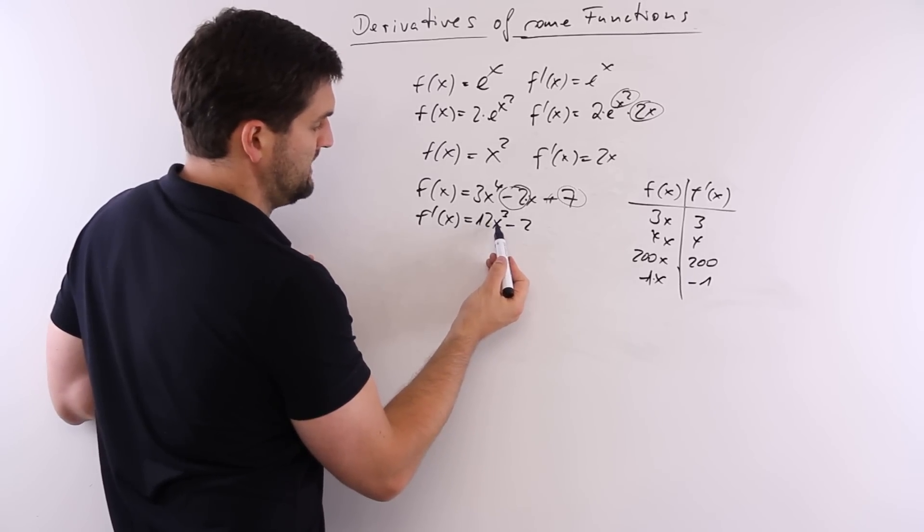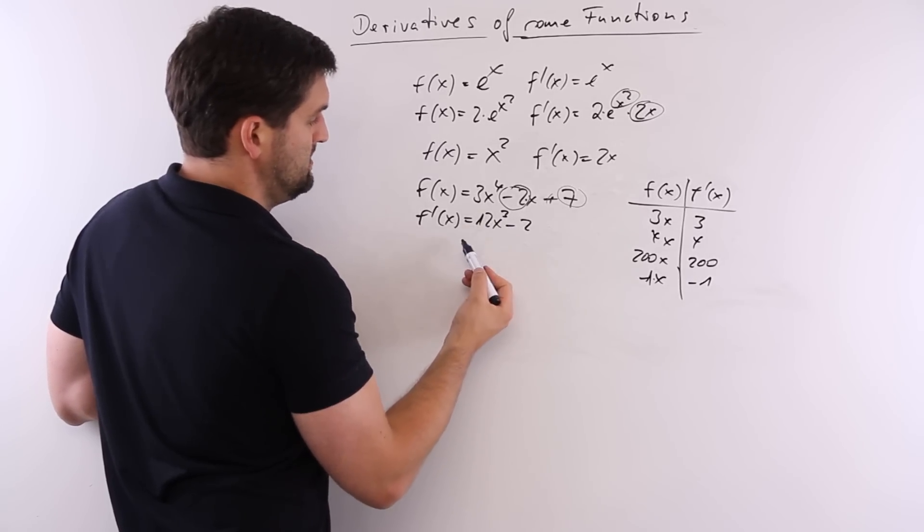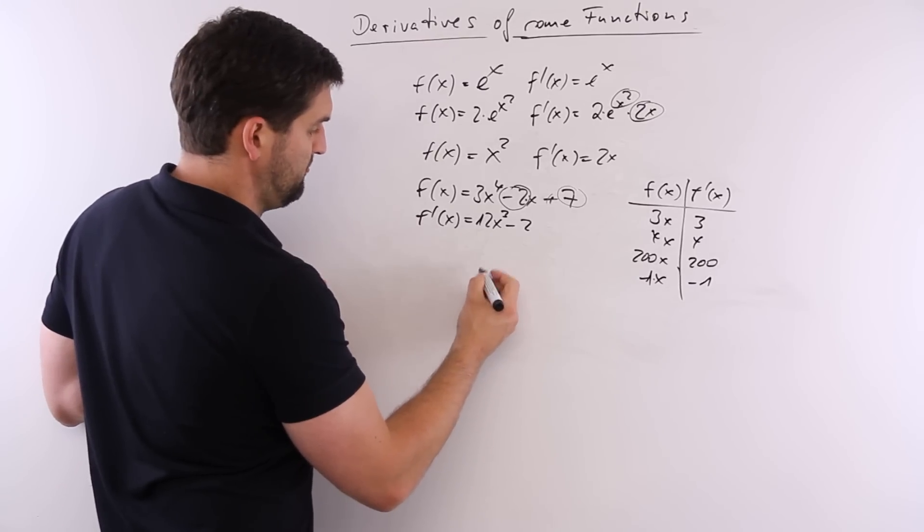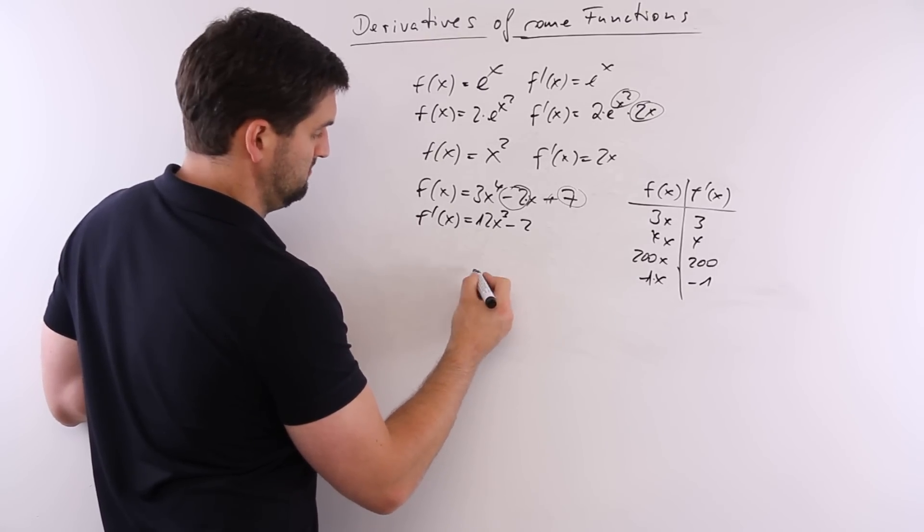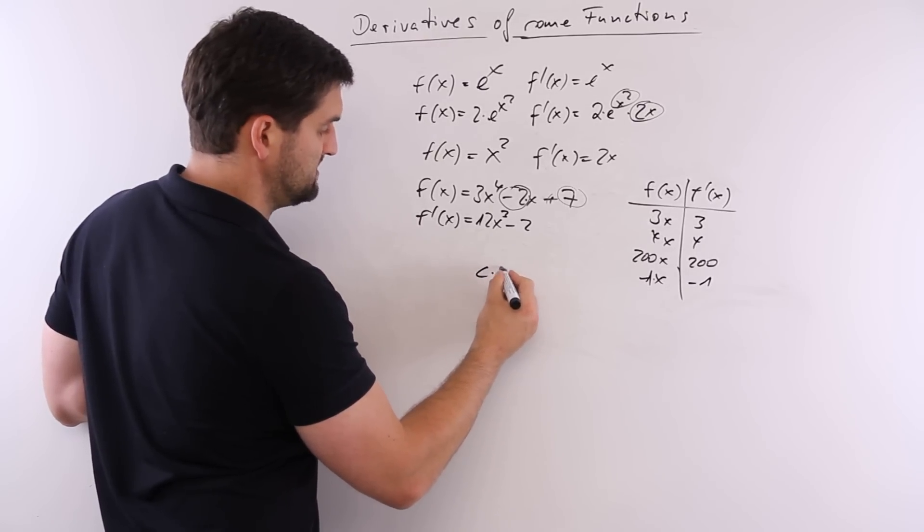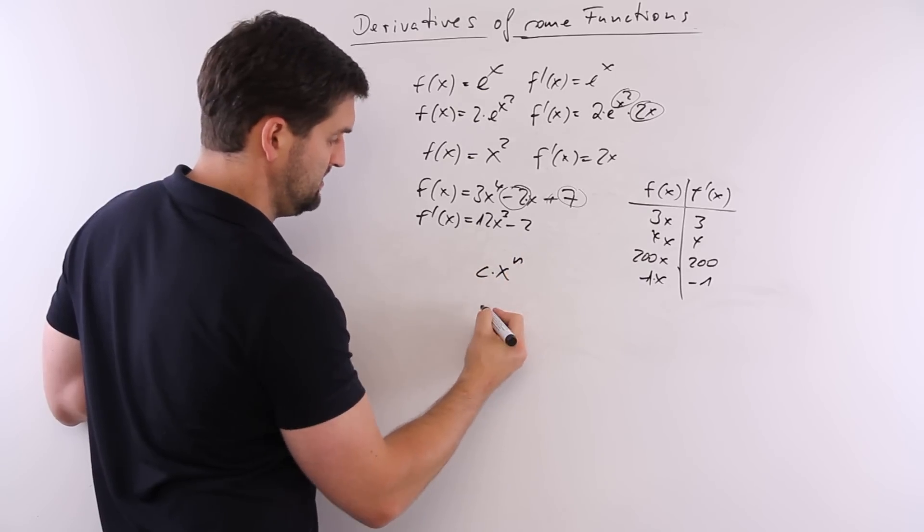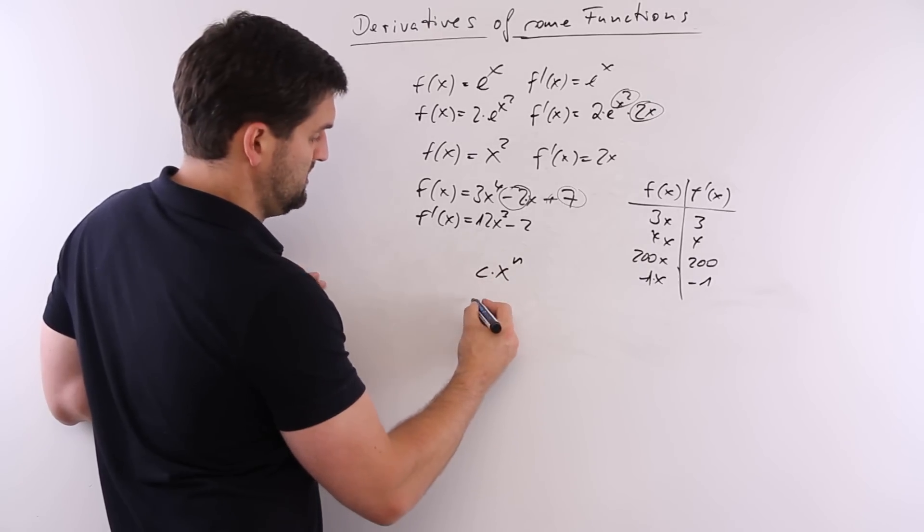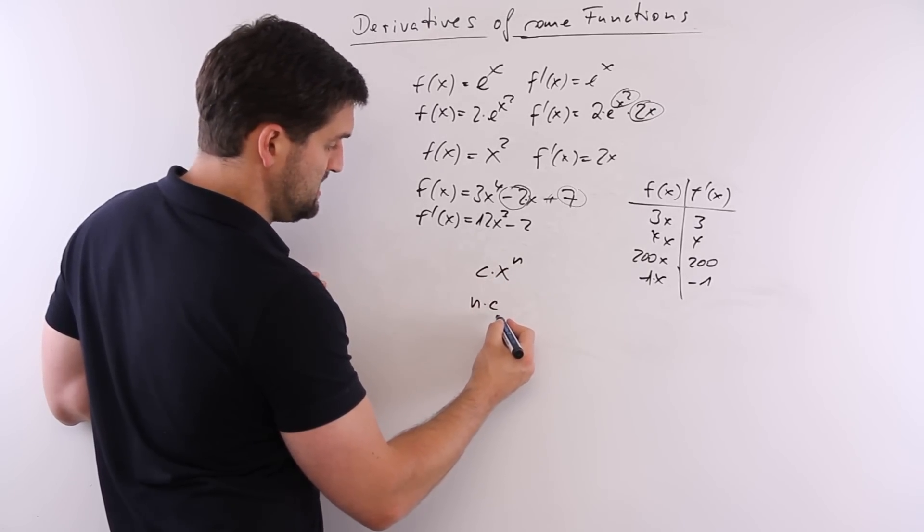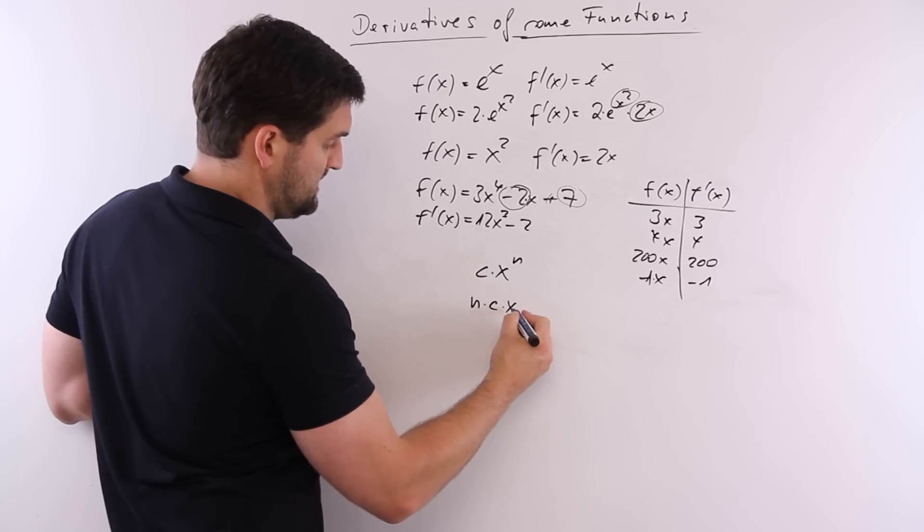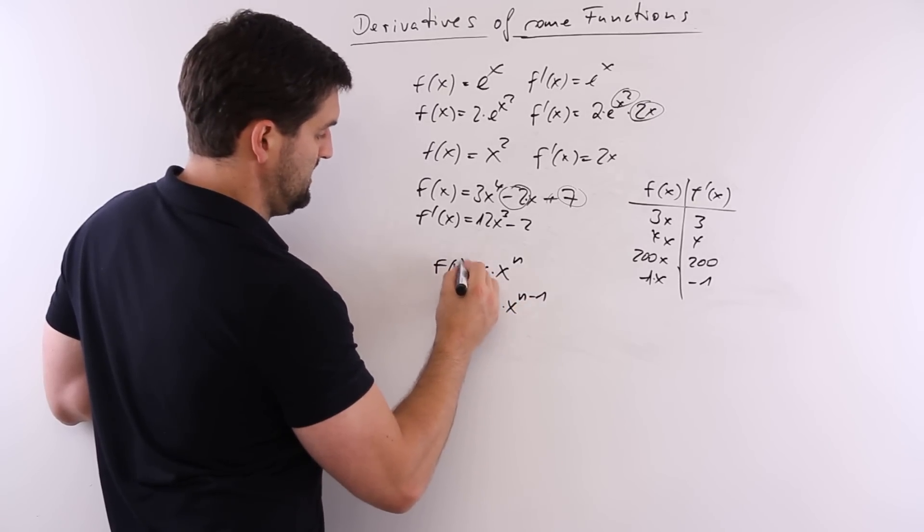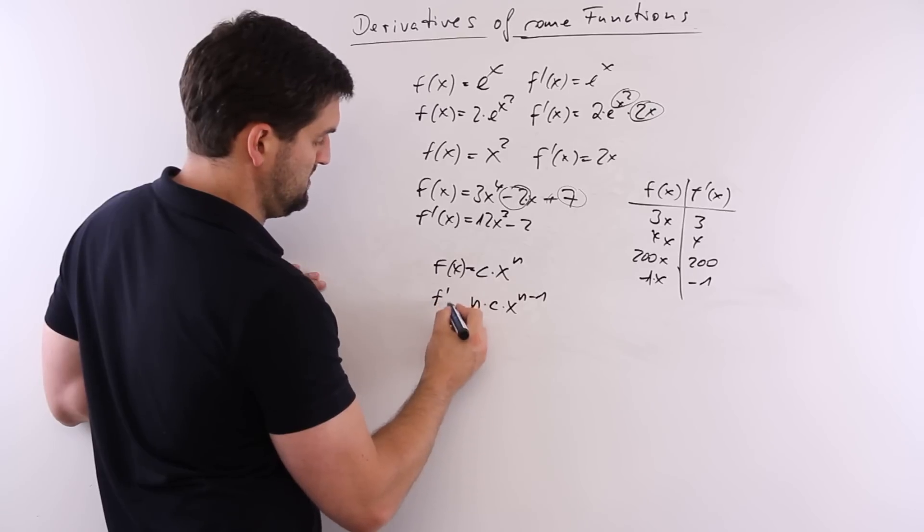What about 12x to the power 3? This is the formula. If you have a number, let's call the number c times x to the power n, and you're looking for the derivative, it would be n times c times x to the power n minus 1. Here is f and this would be the derivative.